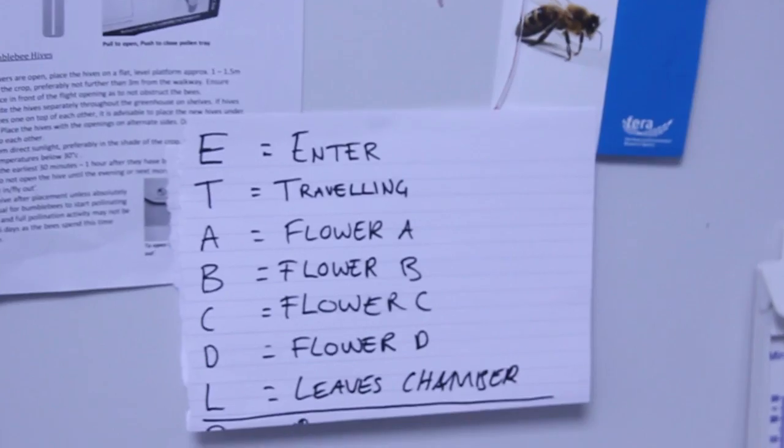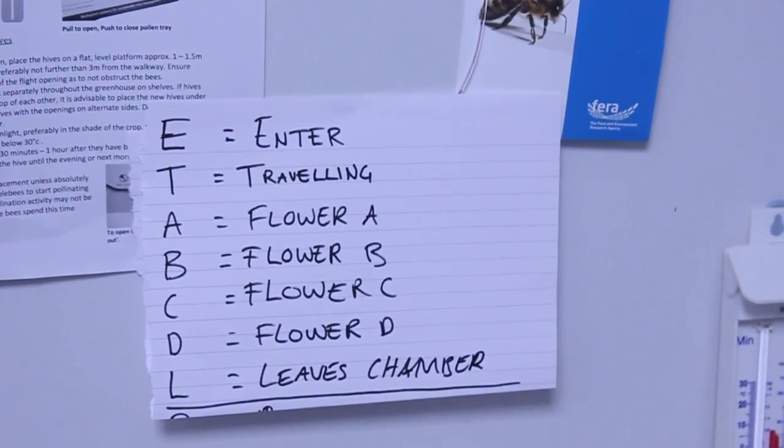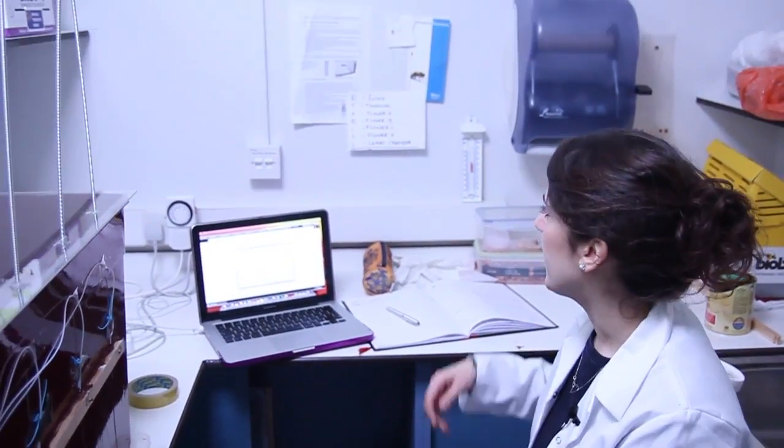So E corresponds to enter, T corresponds to travelling, and then each flower is labelled, so I have A, B, C and D flowers, and then when it leaves the chamber, just press L. And then I know how much time each forager has spent in the chamber, and whether some bees spend more time travelling, or some bees spend more time actually foraging.